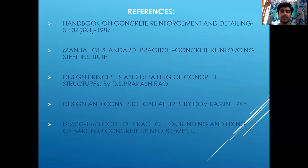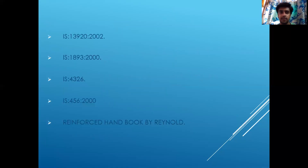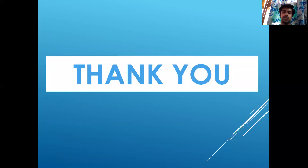Key references and codes for detailing include: SP34 — Handbook on Concrete Reinforcement and Detailing; Manual of Standard Practice by the Concrete Reinforcing Steel Institute; 'Design and Construction Failure' by Doh; IS 2502 — Code of Practice for Bending and Fixing of Bars for Concrete Reinforcement; IS 13920, IS 1893 Part 1, IS 4326, IS 456, and the Reinforcement Handbook.